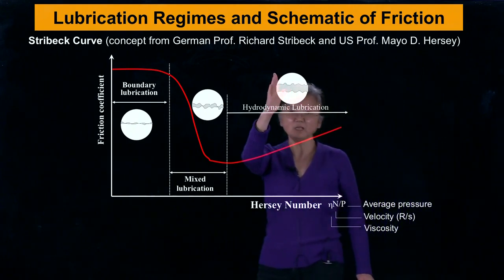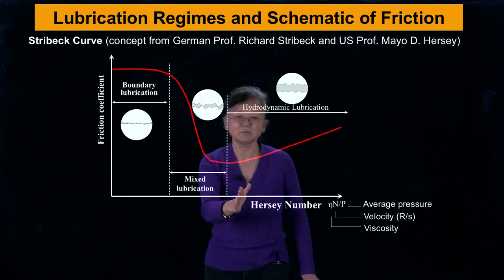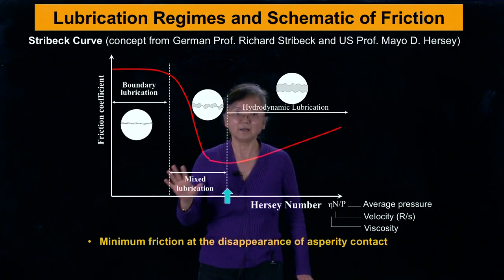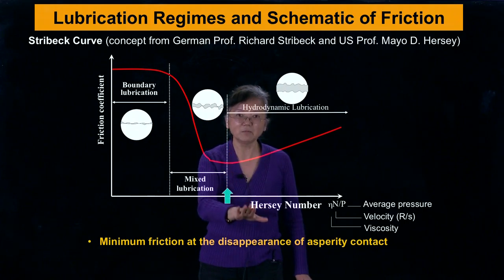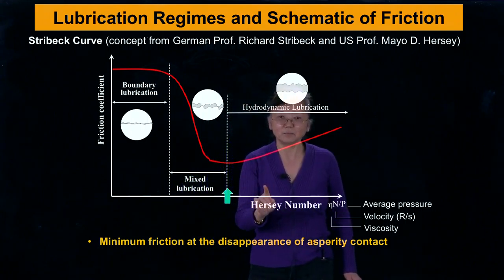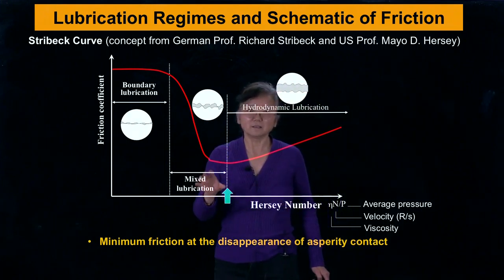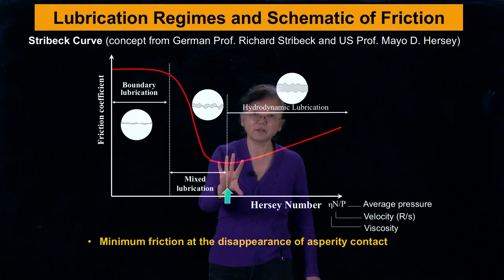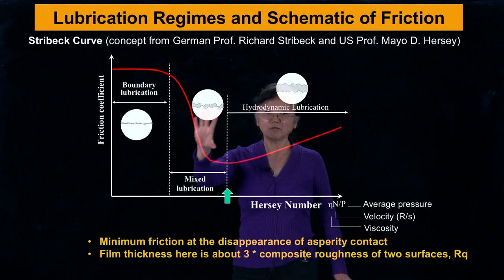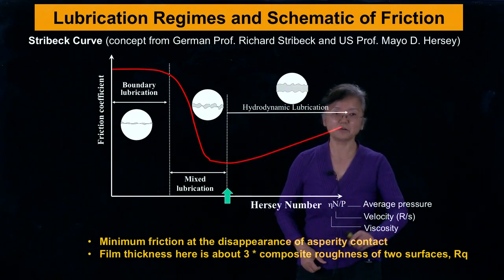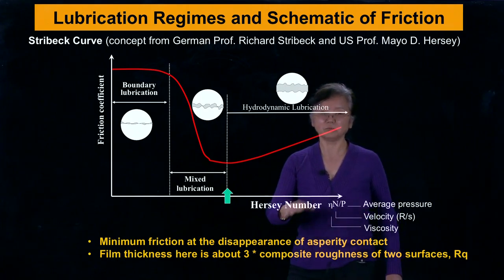We find that there is a minimum friction right at the border between mixed lubrication and hydrodynamic lubrication. At this minimum friction location, asperity contact has just disappeared. At that point, the fluid film thickness is about three times the roughness — specifically the combined or composite roughness of the two surfaces, which we call RQ. RQ is the root mean square roughness, which we will discuss further in class.